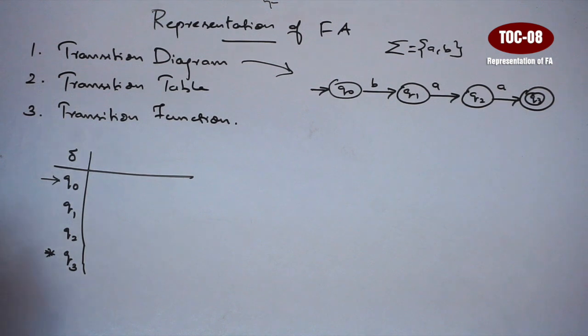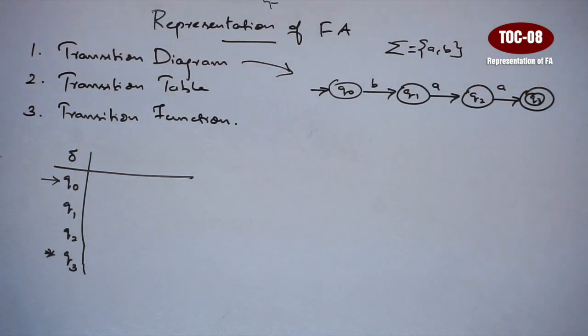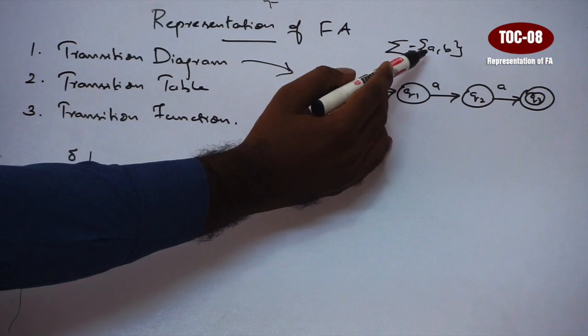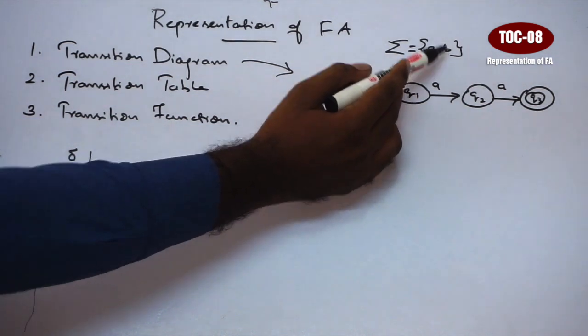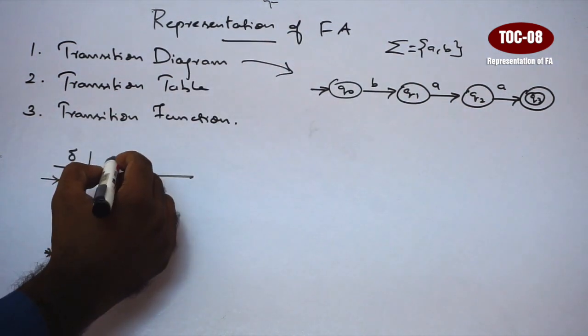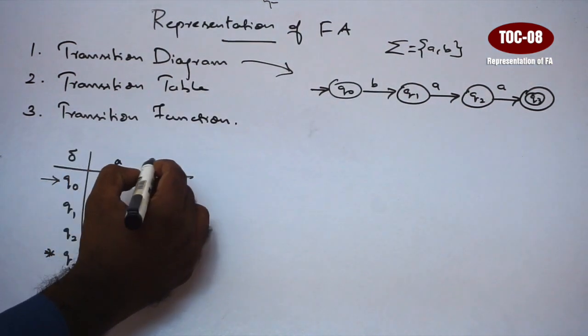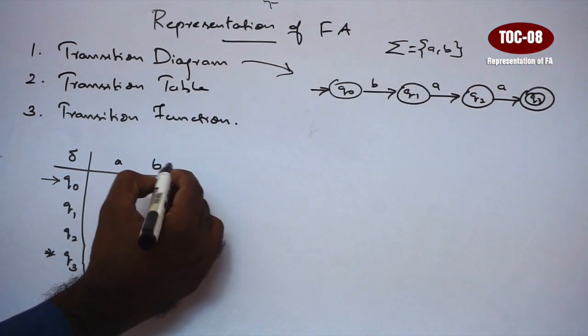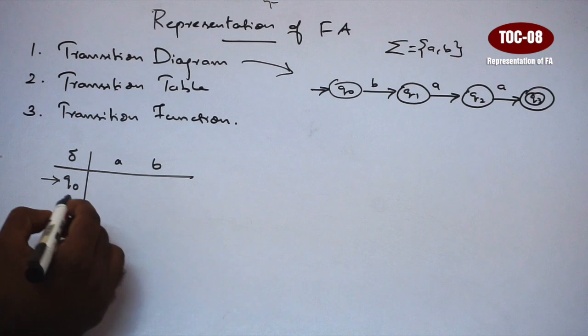Next, input symbols — the input alphabets. What do we deal with? A and B. So the input symbols here are A and B.